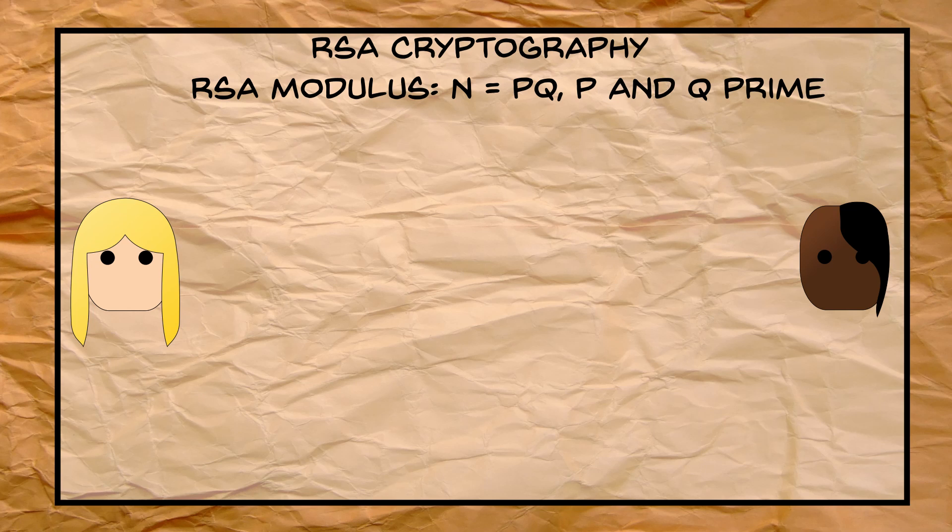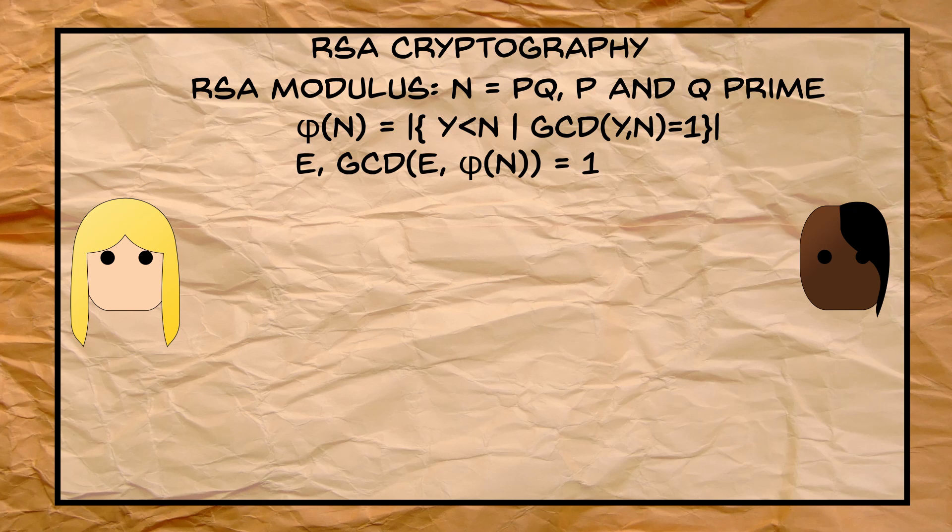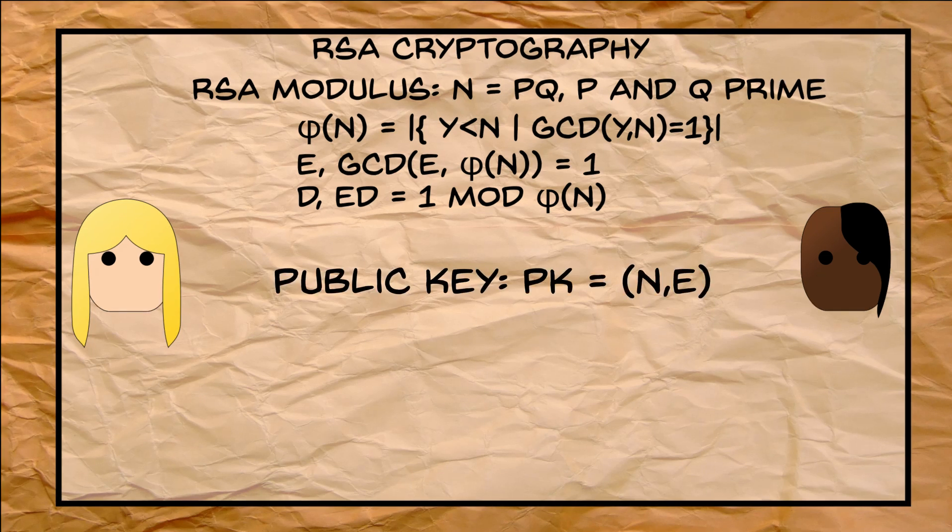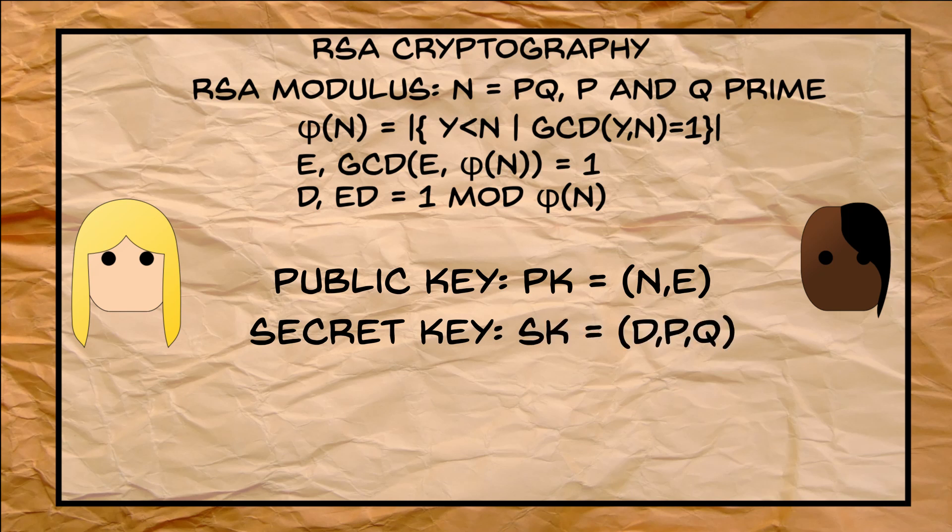For a semi-prime like n, the Euler phi function has a very particular form, which makes it a lot easier for us to choose an exponent e, such that e is co-prime to phi of n, and an exponent d, such that e times d is congruent to 1 modulo phi of n. Now we can define the public key as n, e, and the secret key as d, p, q.